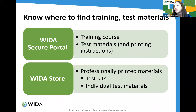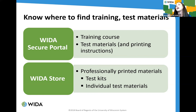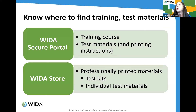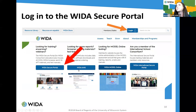It's also important to know where to find training and test materials. Once you have access, the training course and all test materials — as well as instructions for how to print everything — are available in the WIDA Secure Portal under Assessment Training. Should you decide at your local level that you'd like to purchase professionally printed WIDA Screener for Kindergarten test kits, or individual test materials such as storybooks or manipulative cards, you can purchase those in the WIDA Store.